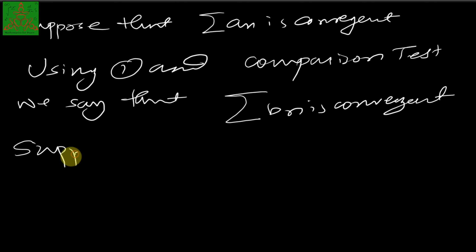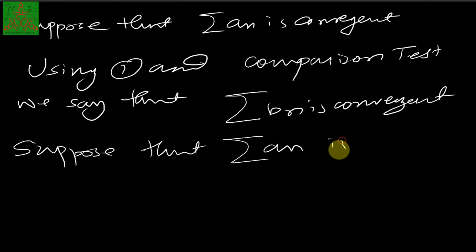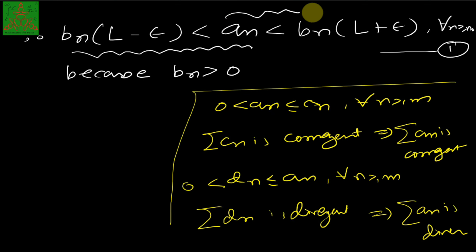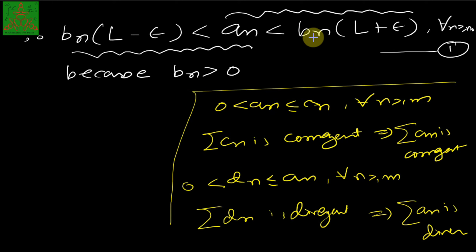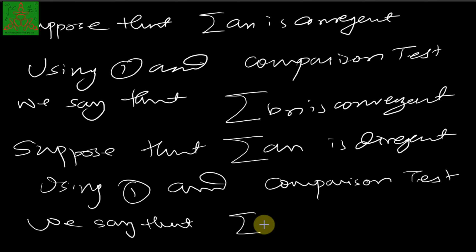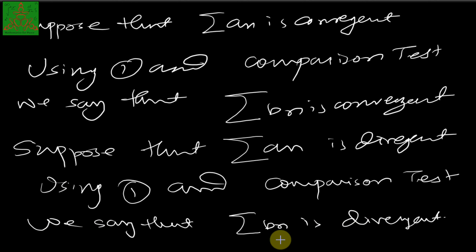Now suppose that the summation of An is divergent. We again use inequality one — this time the inequality An ≤ Bn(L + epsilon). Using this inequality and the comparison test, we conclude that the summation of Bn is divergent. That completes the proof of the limit comparison test.